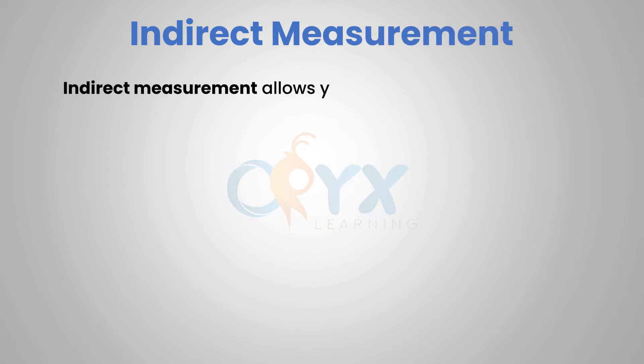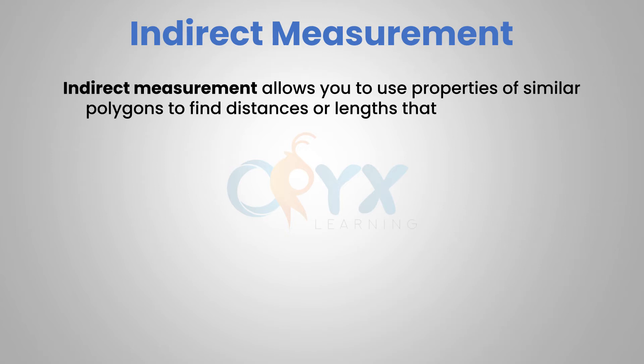Indirect measurement allows you to use properties of similar polygons to find distances or lengths that are difficult to measure directly.